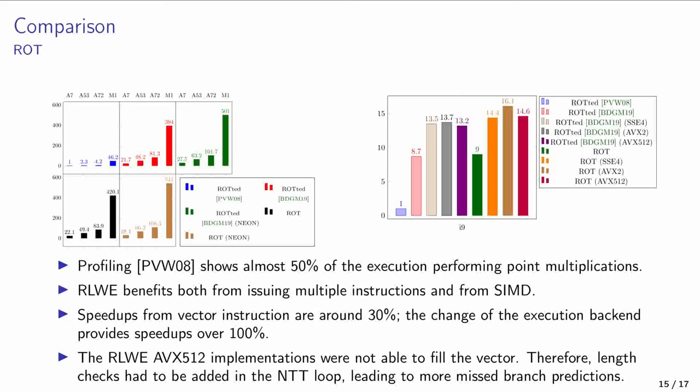To provide more insight on this comparison, profiling PVW showed that almost 50% of the execution was done performing point multiplication, an inherently sequential operation. Moreover, RLWE, due to its ring structure, benefits considerably from using multiple instructions and SIMD. Once again, we see that vector instructions speed up the protocols considerably, around 30%. But changing the execution backend from in-order to out-of-order provides even more considerable speedups, of over 100%.